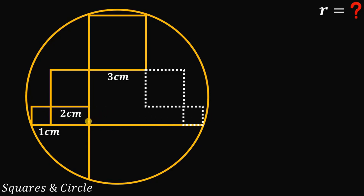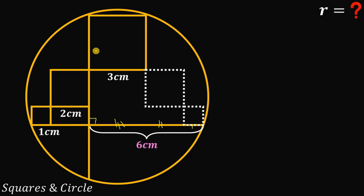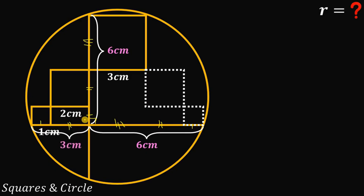Take note that those segments are perpendicular to one another. Now the big question is the length of each segment. This first segment is three plus two plus one centimeters, equal to six centimeters. The next segment is three plus two plus two plus one centimeters, also equal to six centimeters. The next is one plus two centimeters, equal to three centimeters.